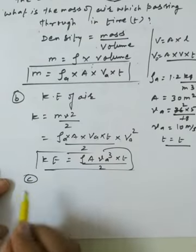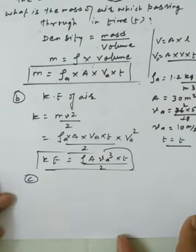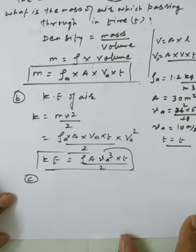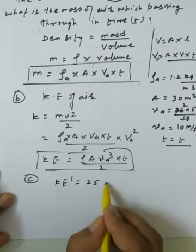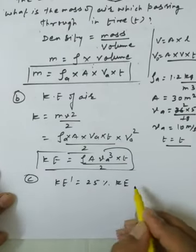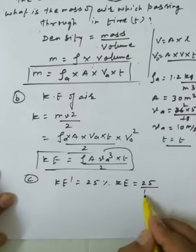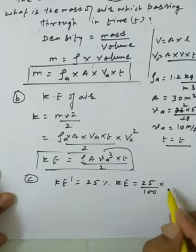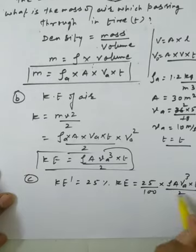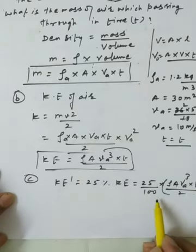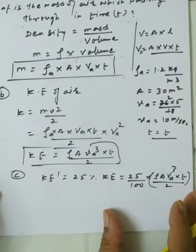Part (c): the windmill converts 25% of wind energy into electrical energy. So the converted kinetic energy = (25/100) × (1/2)·ρ·A·V³·T = (1/8)·ρ·A·V³·T.